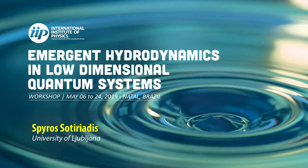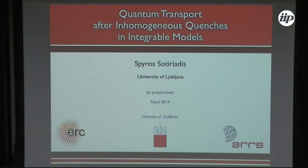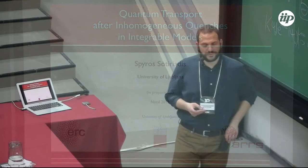I'm going to talk about an analytical method to calculate the asymptotics of local observables after a homogeneous quench in integrable models, which is at least in my view the standard mathematically exact way to derive the asymptotics. It's work that is still in progress. There are several highly technical steps, and I'm going to report the progress I've made so far.